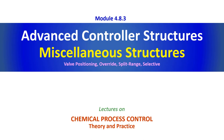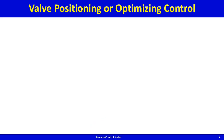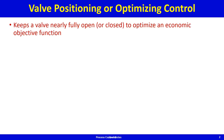Let's get straight to business. Valve positioning control is also called optimizing control because many times running the process at a nearly fully open valve or a nearly fully closed valve is economically beneficial. So valve positioning control is that control structure that keeps the valve nearly fully open or closed to optimize an economic objective function.